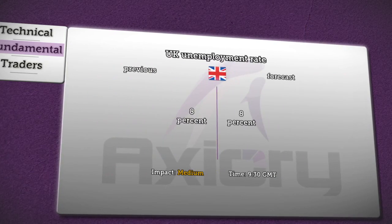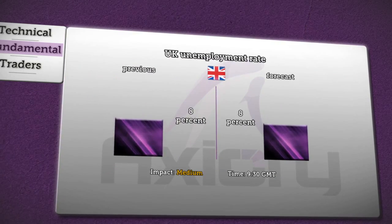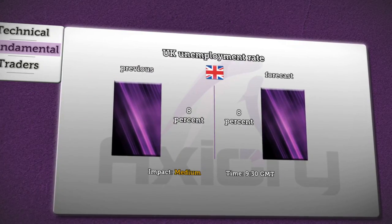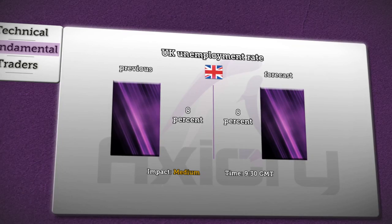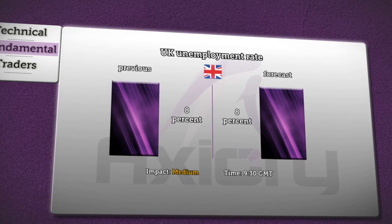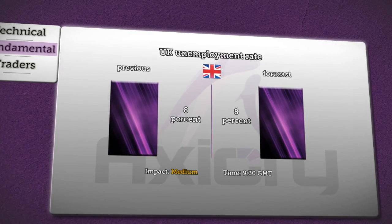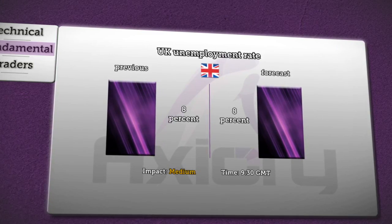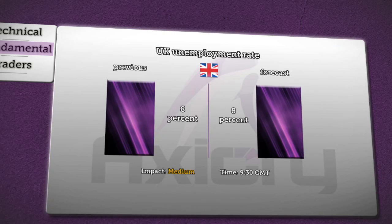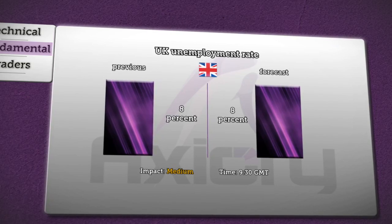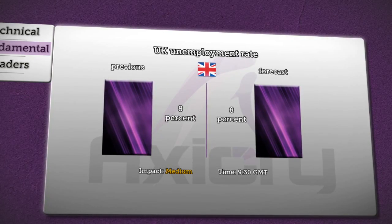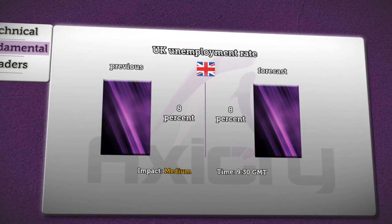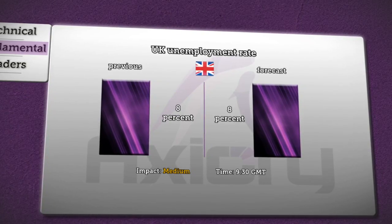Also, at the same time, the Office for National Statistics is going to release figures about the unemployment rate in Britain. An increase to 8% unemployment rate is expected, and analysts are expecting a medium impact on the sterling.